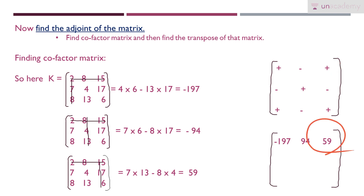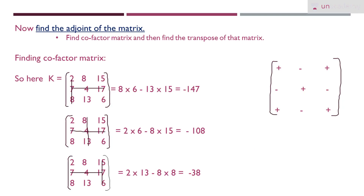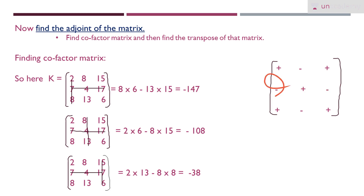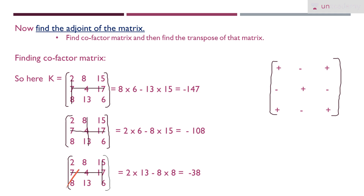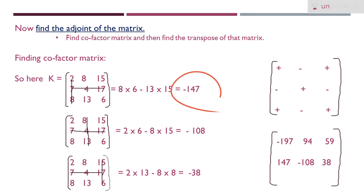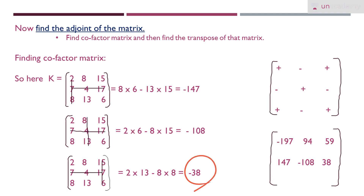For the second row: cut row 2 and column 1, compute 8×6 − 13×15 = −147; cut row 2 and column 2, compute 2×6 − 8×15 = −108; cut row 2 and column 3, compute 2×13 − 8×8 = −38. Applying the signs (−, +, −): −147 becomes +147, −108 stays −108, and −38 becomes +38.